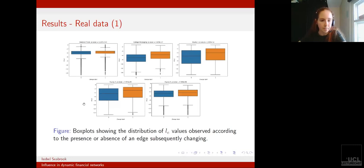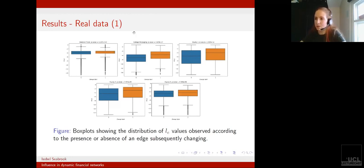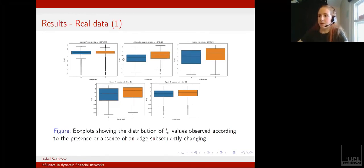We immediately see that there's a difference across the different data sets. For the college messaging data set and the first two equities data sets, we do see a noticeable difference in the means of these distributions between edges which don't change and edges which do.